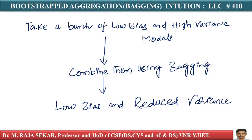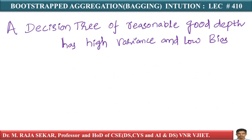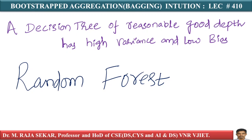An example of a low-bias, high-variance model is a decision tree of reasonably large depth. A deep decision tree has high variance and low bias. One of the most popular bagging techniques uses deep decision trees and combines them using the bagging strategy — and that technique is called Random Forest, which we will discuss in the next few lectures.